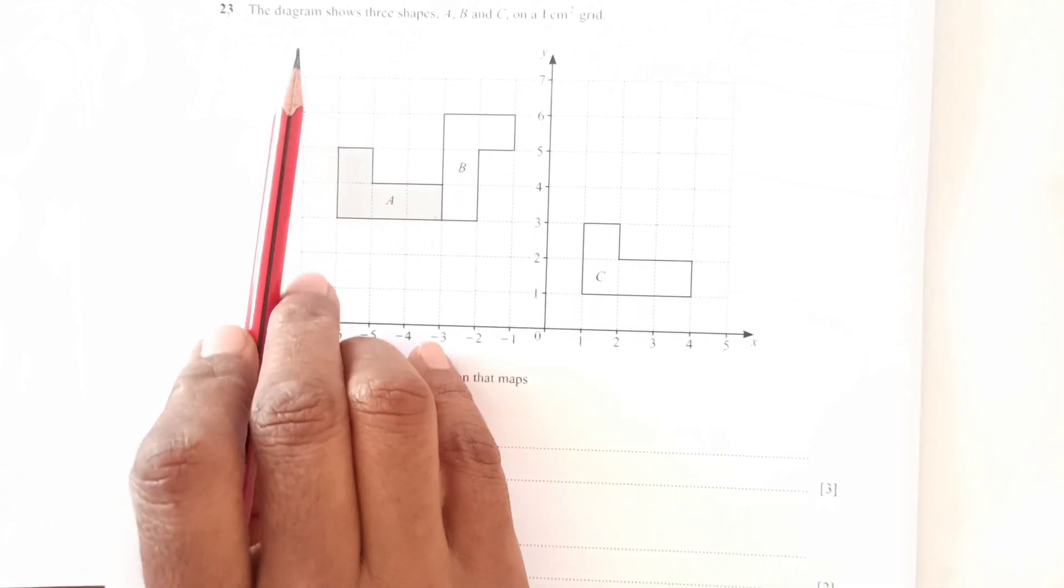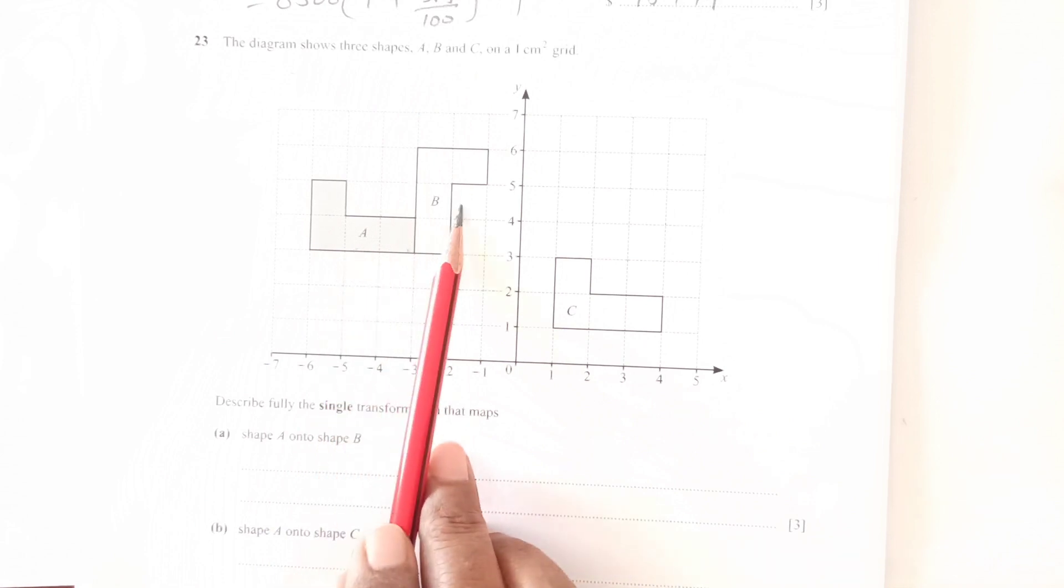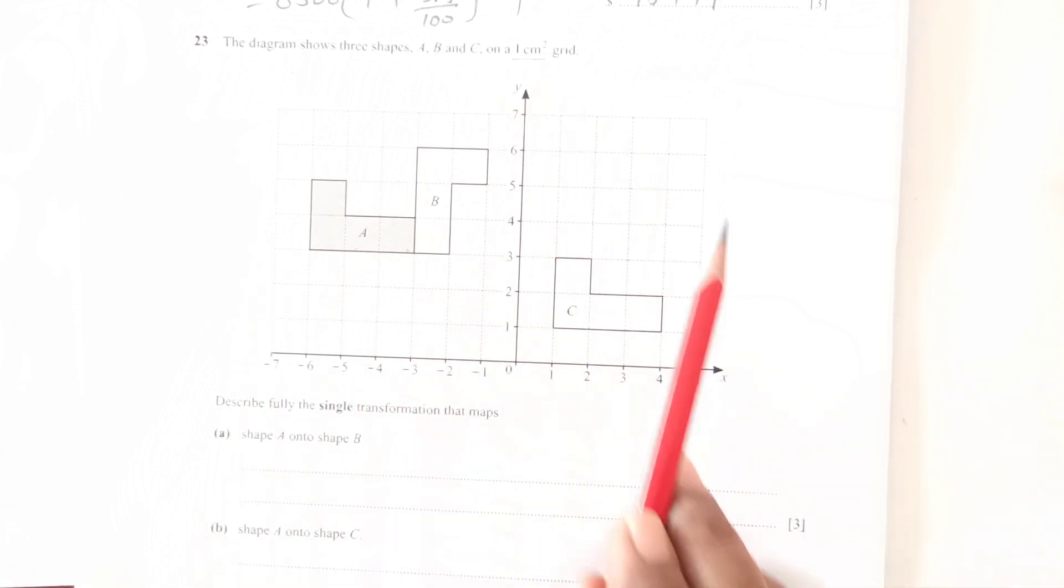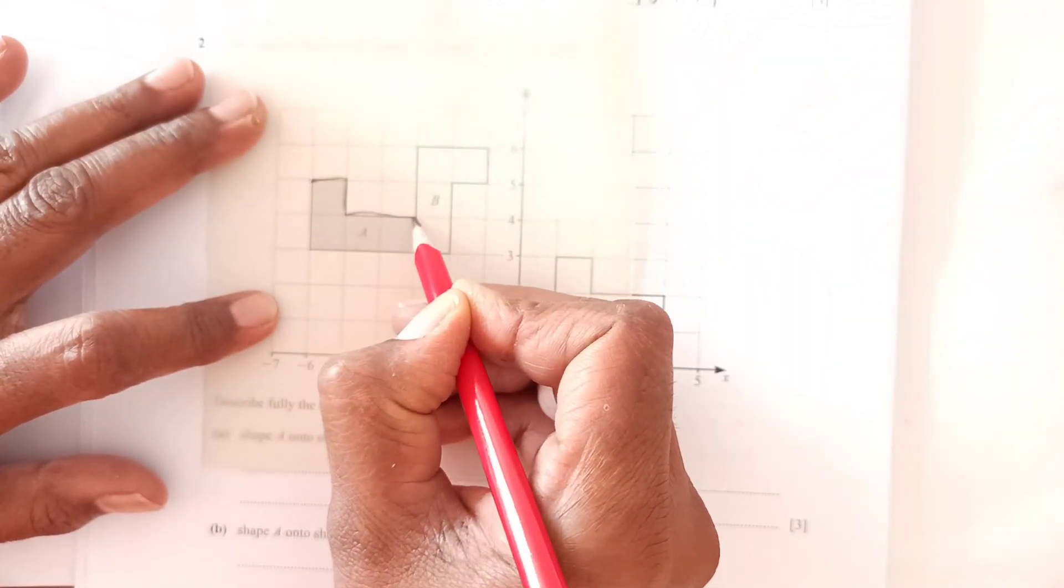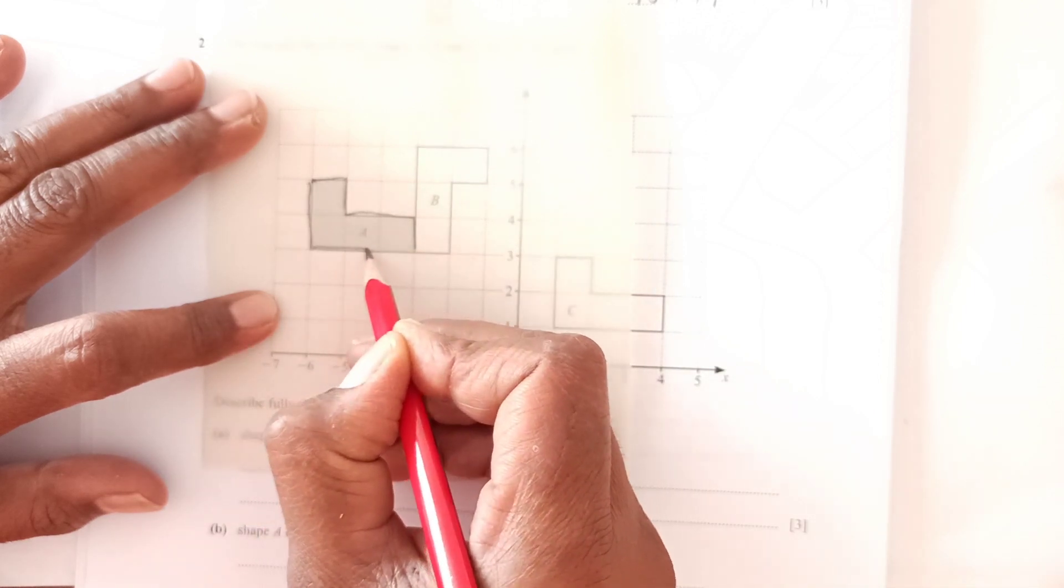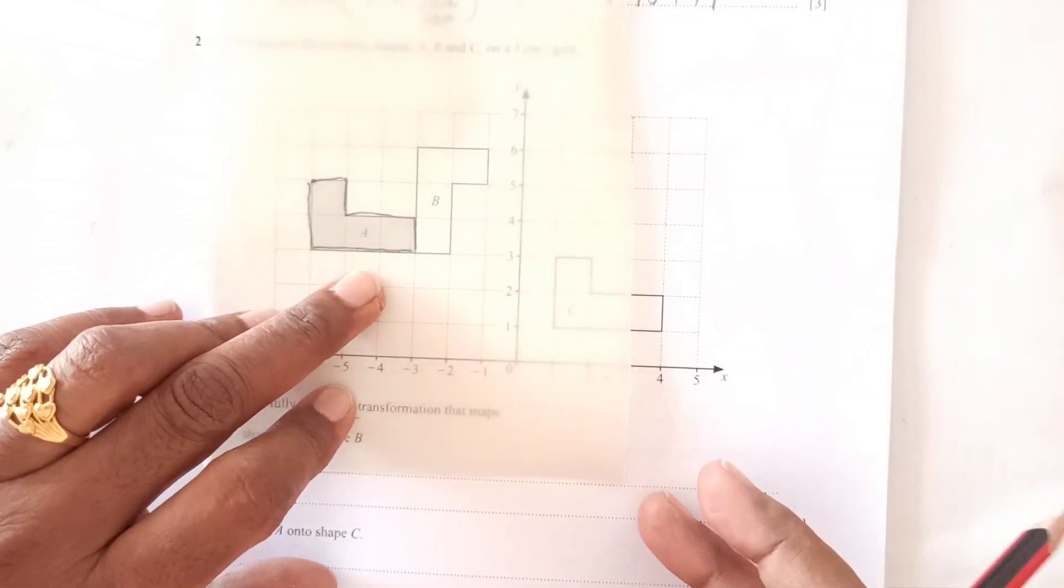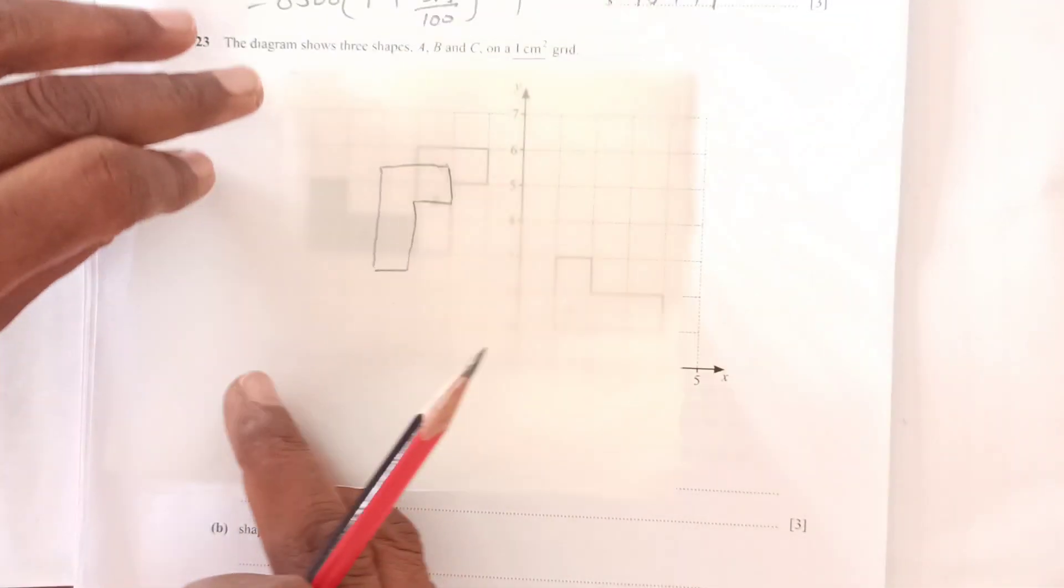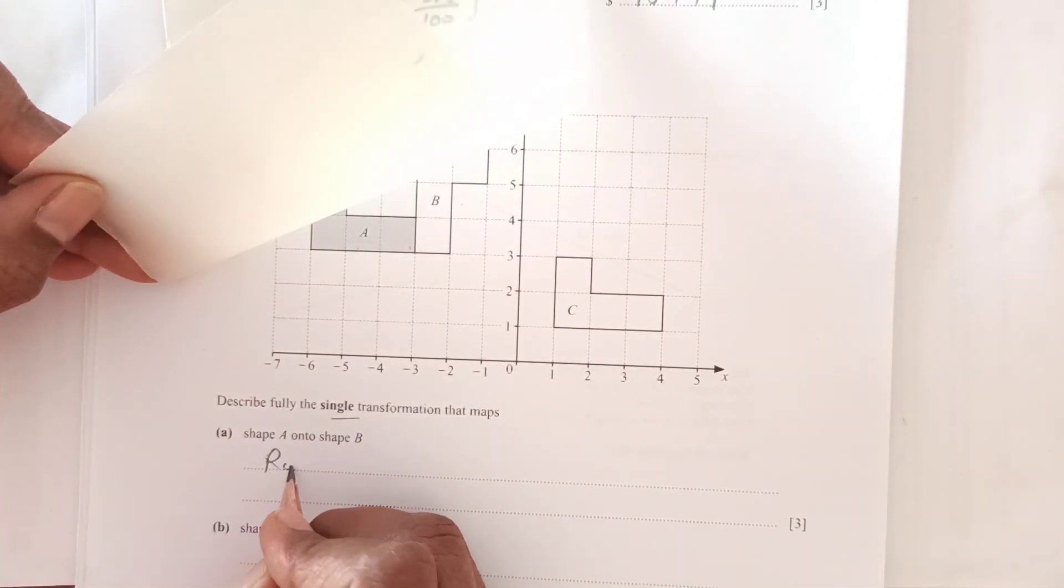Number 23: The diagram shows three shapes A, B, and C on a 1 cm square grid. Describe the single transformation from A to B. Let's trace this shape. If I rotate this, I can see it matches shape B.